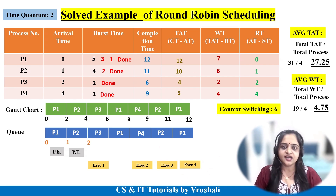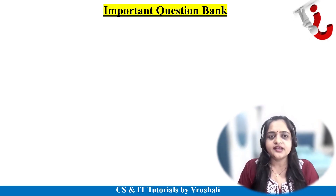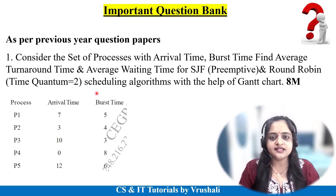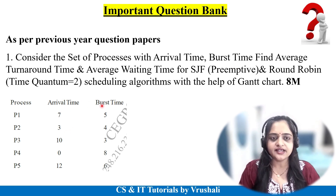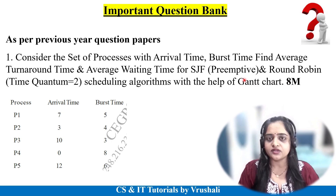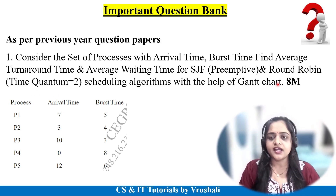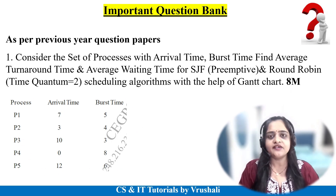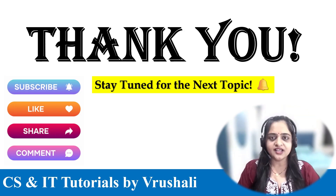This is all about the round robin scheduling algorithm. You must prepare for your examination. As per previous year question papers, this kind of question has been asked repeatedly — for example: consider a set of processes with arrival time and burst time given, and find average turnaround time and average waiting time by solving with SJF preemptive and round robin scheduling algorithm with time quantum 2, and draw the Gantt chart. This kind of question is generally asked for 8 marks and has appeared 2 to 3 times in previous year papers. Stay tuned for the next topic, and please subscribe and share with your friends. Thank you.